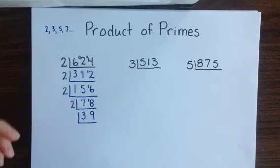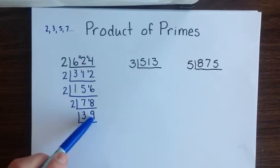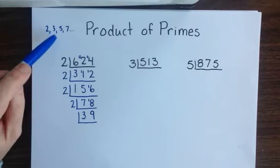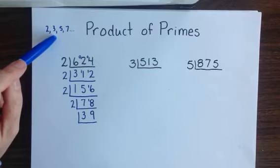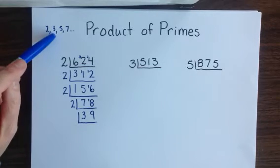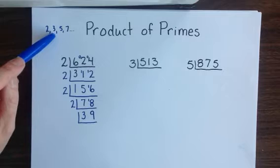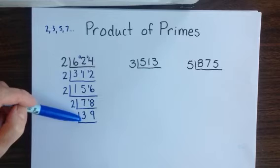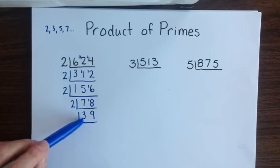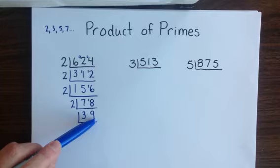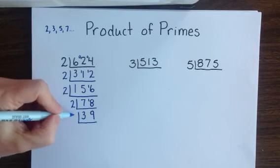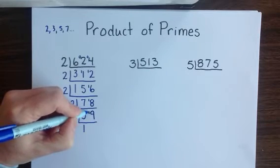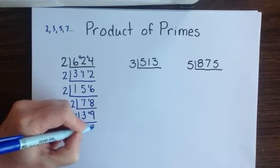I finally have a quotient that does not end in an even number. So I need to look at my primes and decide if the next smallest prime, 3, will fit into 39. Recall that the rule for 3 says if you add the digits and they add up to a multiple of 3, then the number will also divide by 3. Since 3 plus 9 equals 12, 39 is divisible by 3. So 3 fits into 3 one time with no remainder, and into 9 three times.